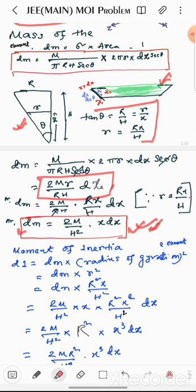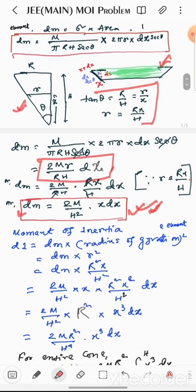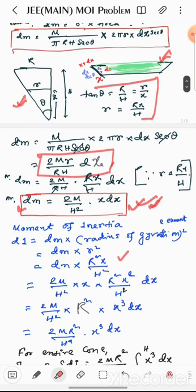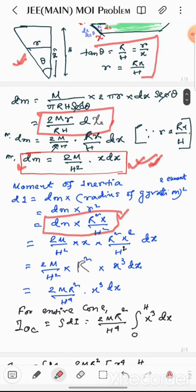By putting the value of small r we get dm into r square x square by H square. By putting the value of dm we get this value: 2M R square by H to the power 4 and x cubed dx.